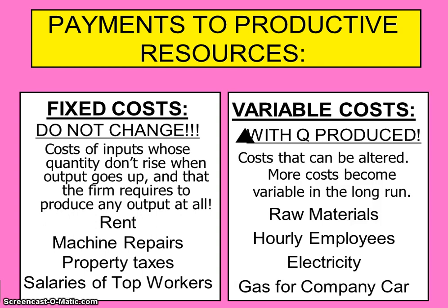Variable costs change with the quantity produced — delta means change. So variable costs do change in the short run depending on the quantity of production. These costs can be altered, and more costs become variable in the long run, and eventually everything is variable. So these are things that if you produce more, it costs you more: raw materials, hourly employees — the more workers you have on the shift, the more you pay them. Hourly employees are variable because they're paid based on how much they work, unlike salaried employees. Electricity and gas for the company car — you pay for the amount you use. Anything that varies depending on how much is produced is a variable cost.